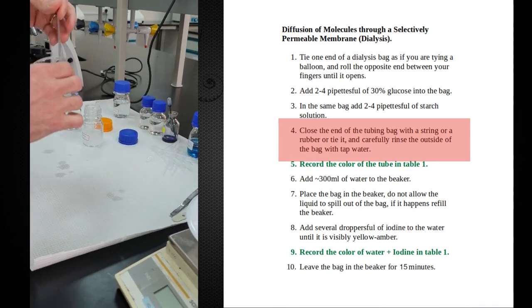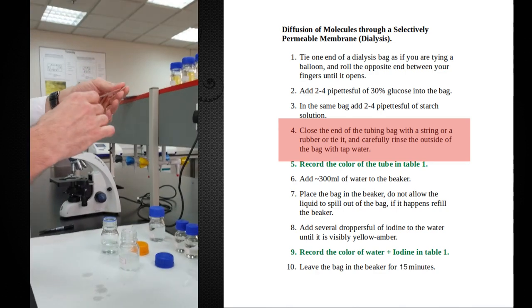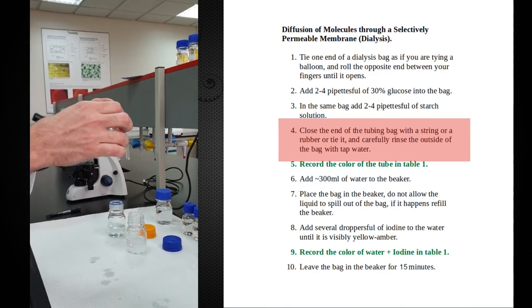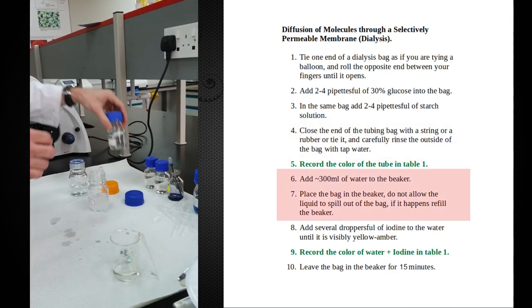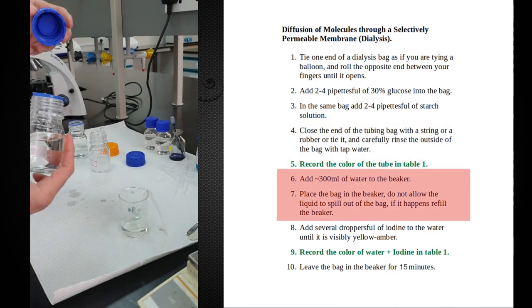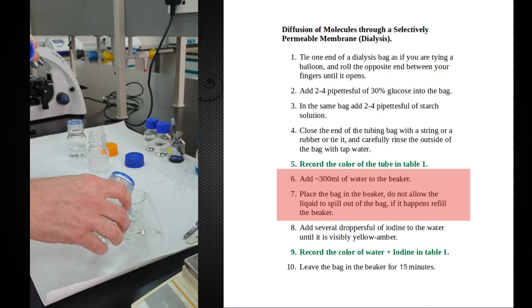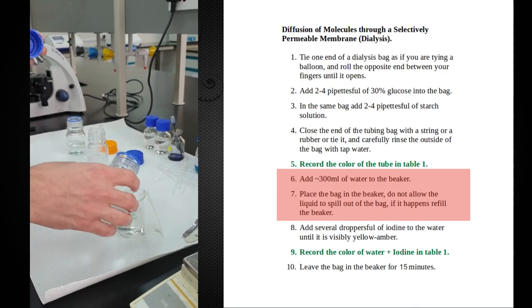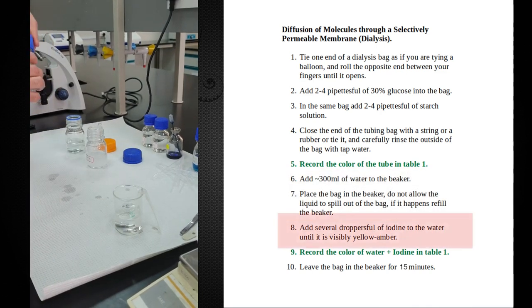Now, some labs have fancy clamps that you can put on to close these things. We don't have any of those, so we're just going to fold it over the side. And we're going to add some water to this that we know is pure water, so it doesn't have any starch or glucose in it.